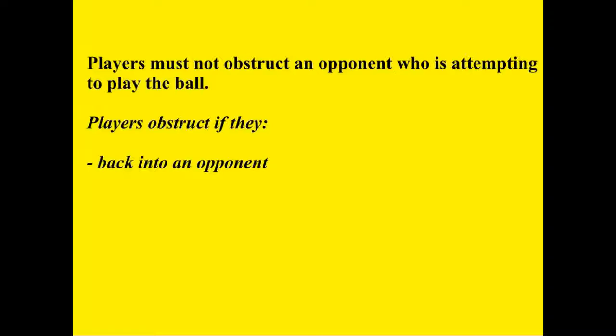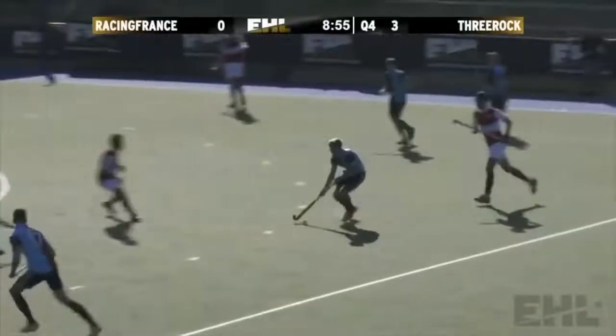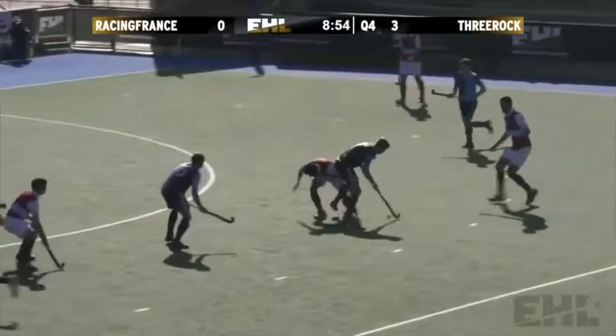I consider backing into an opponent to be different from physically interfering with an opponent. Firstly, because if it were the same it would unnecessarily duplicate the clause on physical interference. And secondly, it is only necessary for a player intent on tackling to be within playing reach of the ball to be obstructed. Therefore, backing into the playing reach of an opponent while shielding the ball to prevent a tackle attempt is obstruction. Did the attacker back towards the defender and into his playing reach? Again the answer is yes — that's obstruction.